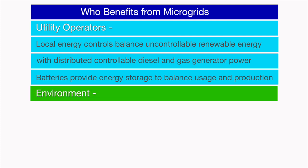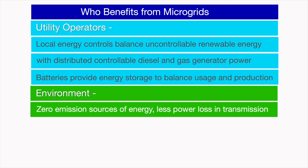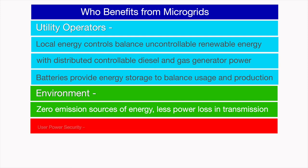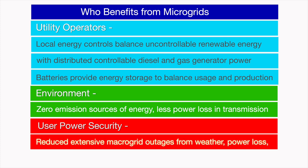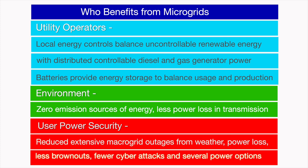The environment is a huge beneficiary, principally from zero-emission power sources and a reduction in power losses through transmission lines within macrogrid systems. User power security is greatly enhanced, and users don't have to rely on an aging macrogrid with its exposure to weather, overload brownouts, cyber attacks, and the reliance on one power source.